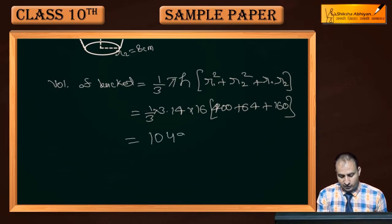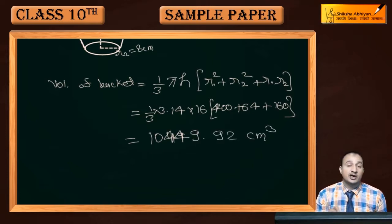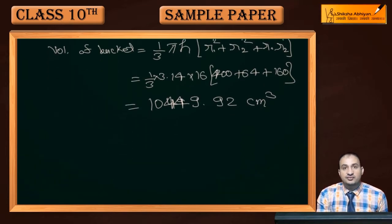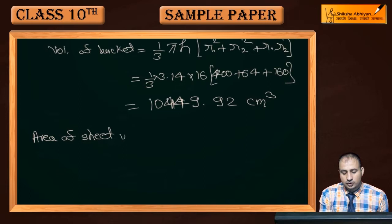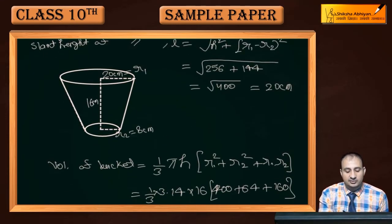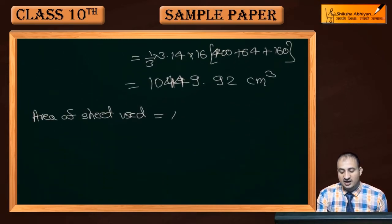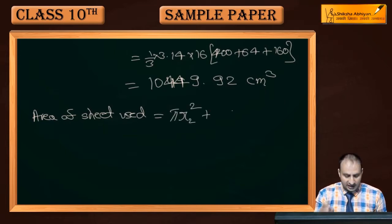After calculation, the volume comes out to be 10449.92 cm³. Now for the area of sheet used: Area = curved surface area of frustum + base area = πl(r1 + r2) + πr2². The base area is π × r2² = 3.14 × 64.